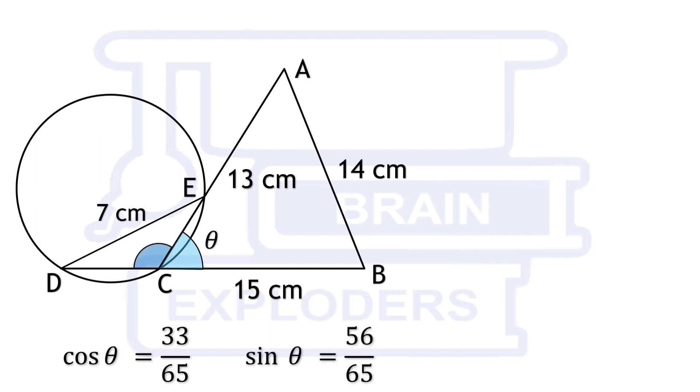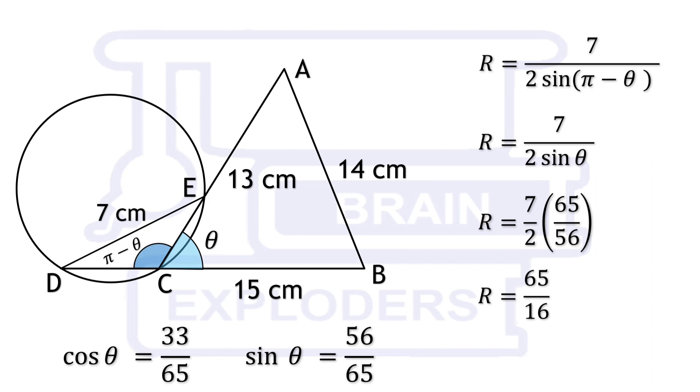DE is the chord of the circle and angle opposite to it is pi minus theta. So, radius is equal to 7 over 2 sin pi minus theta. On putting the value of sin theta, we find R equals to 4.0625 centimeters.